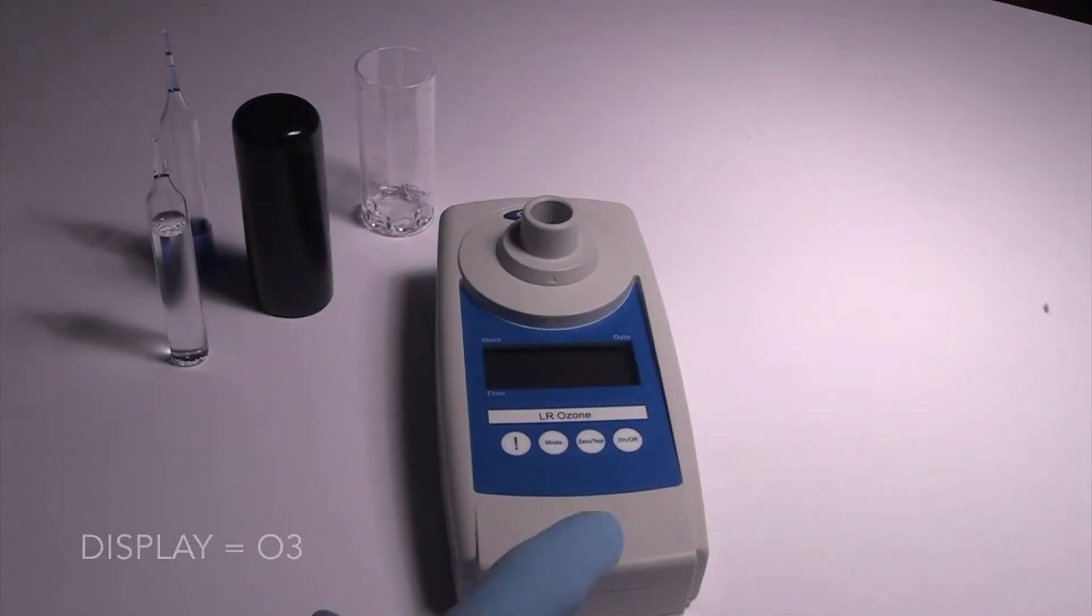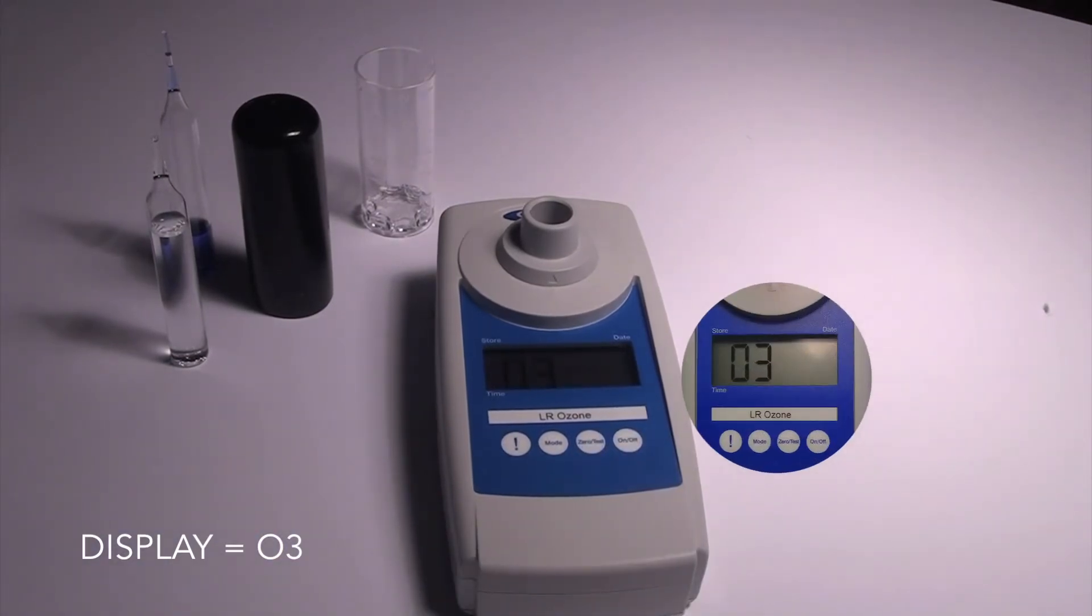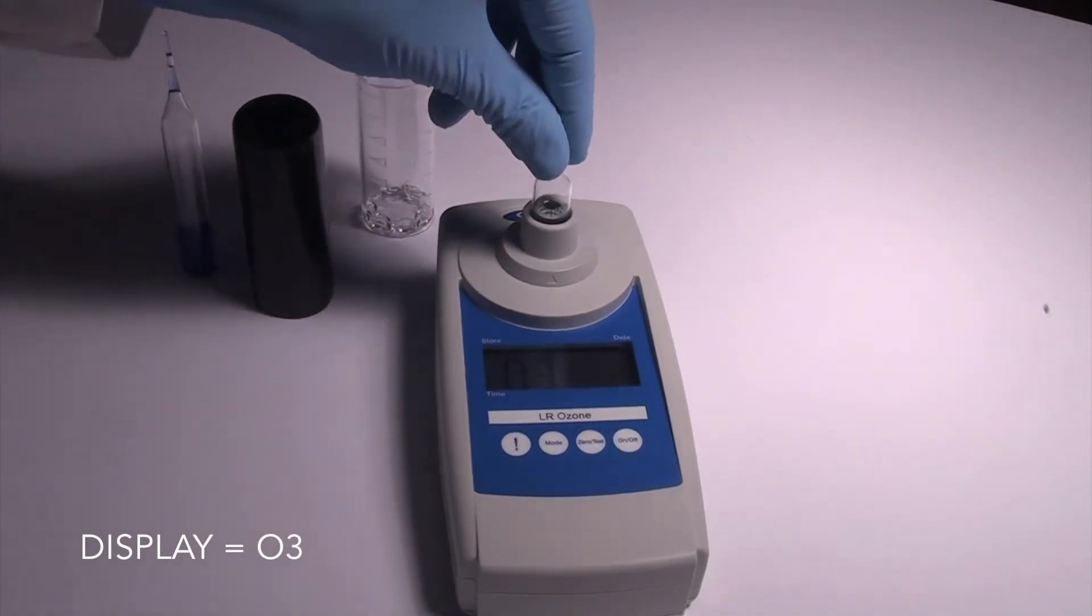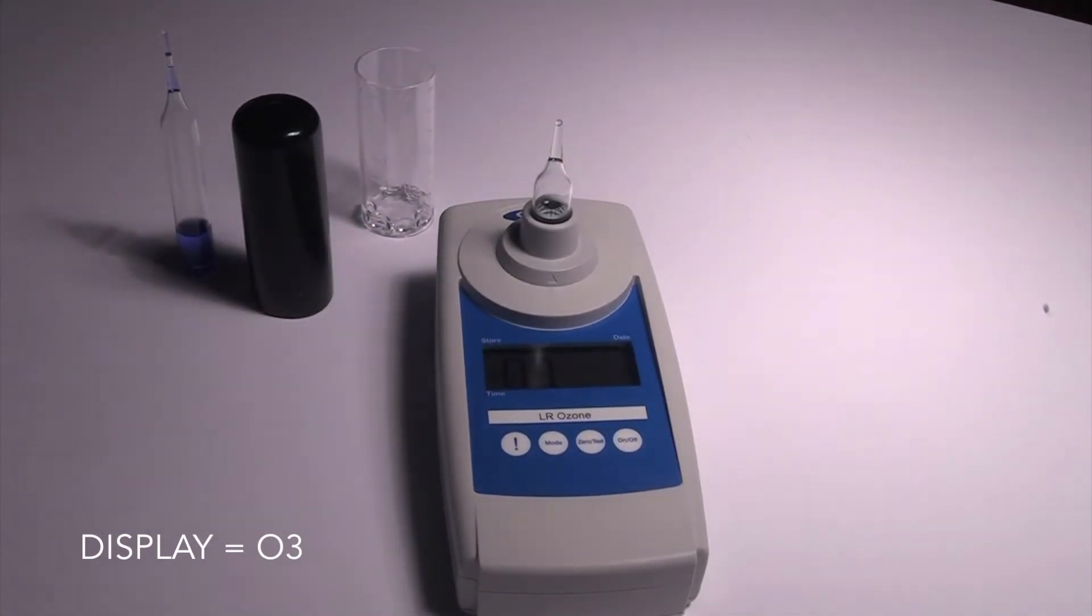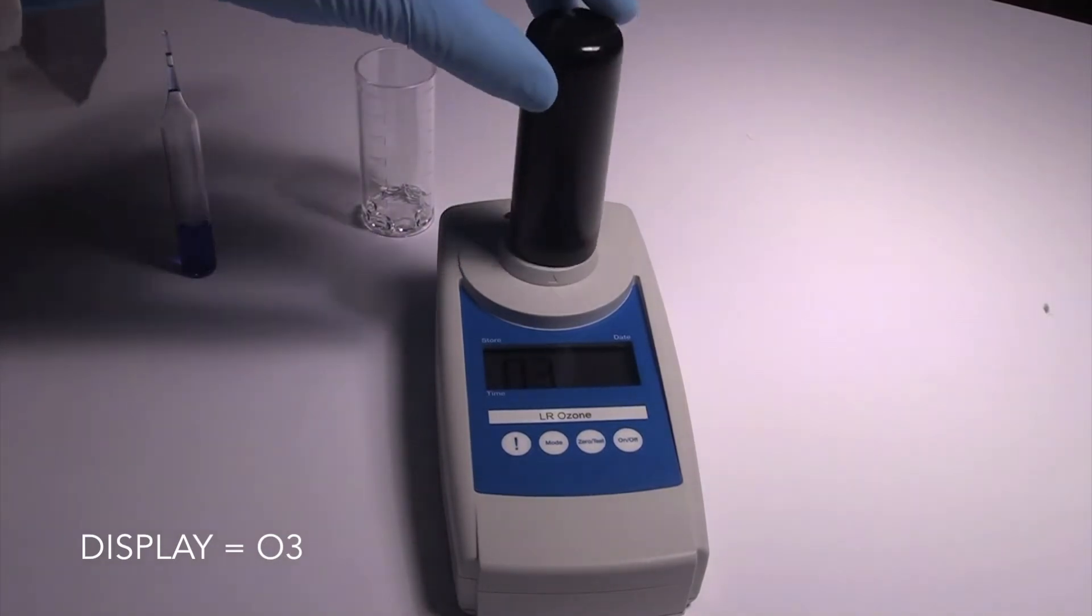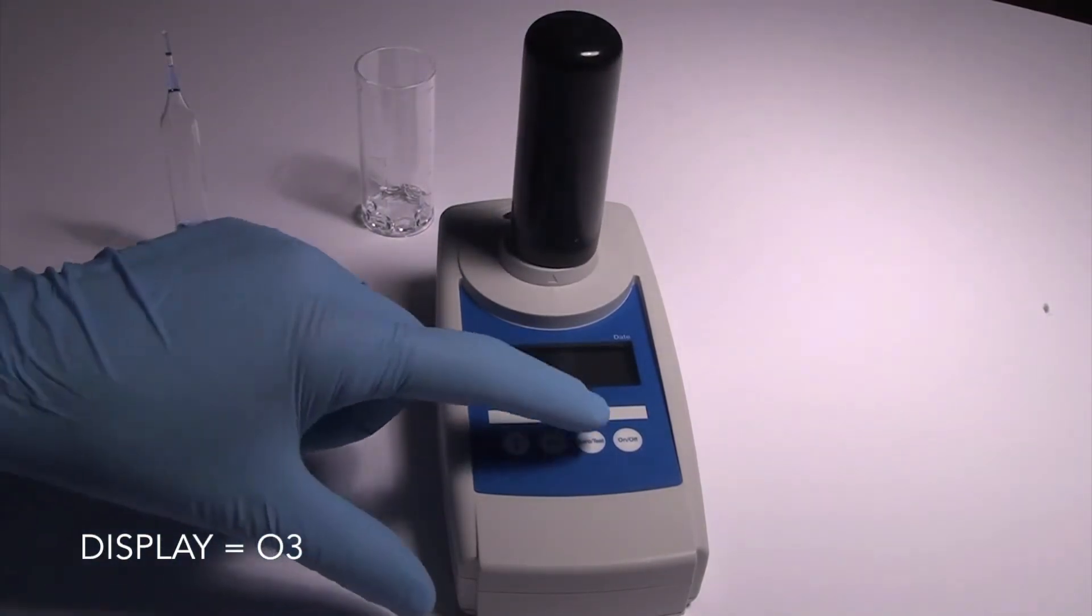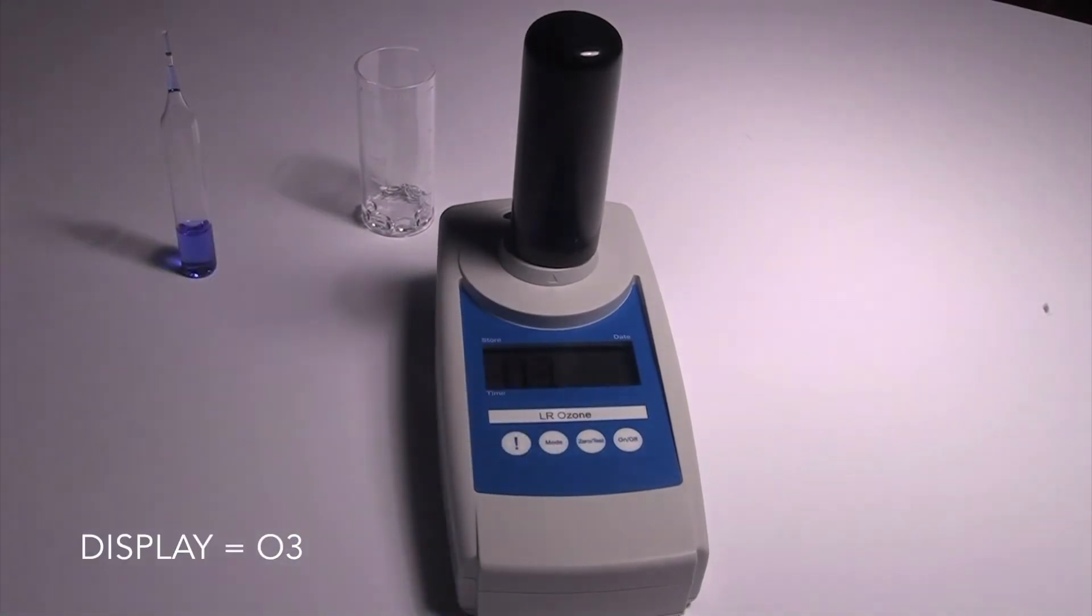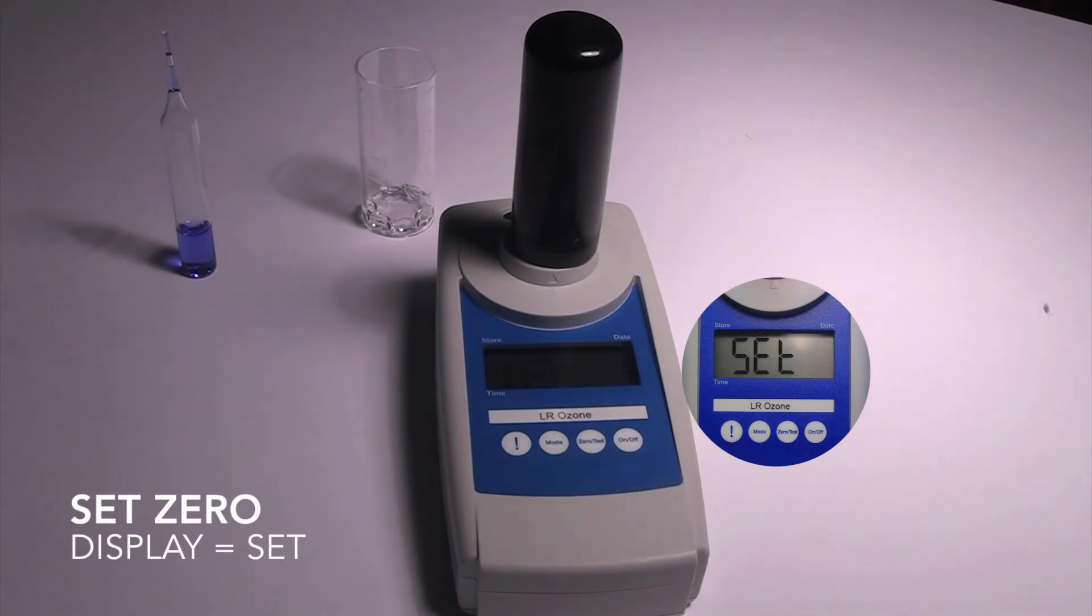To begin, zero the SAM. Press the ON-OFF key. The display will show O3 for ozone. Insert the zero ampoule, flat end first, into the sample cell compartment, making sure that it's fully seated. Place the light shield over the zero ampoule. Press the zero test key. The ozone symbol will flash for approximately 8 seconds, and then the display will show SET.